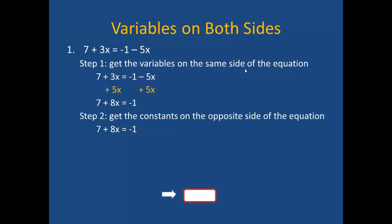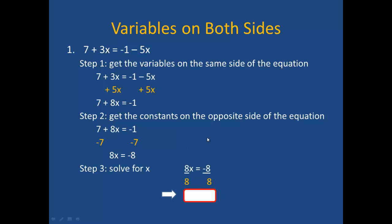My second step is to get the constants on the opposite side of the equation. In order to do that, I am going to subtract 7 from both sides and simplify to get 8x equals negative 8. My last step will be to isolate x by dividing both sides by 8. That will yield the solution x equals negative 1.